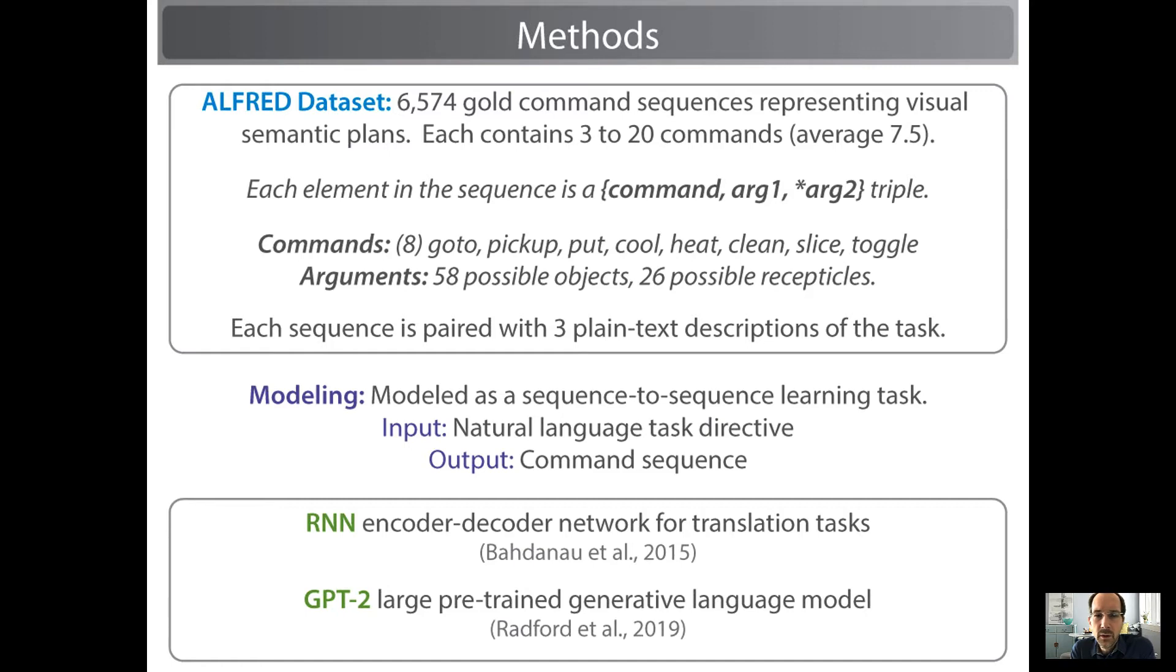In this paper, the visual semantic planning task is modeled as a sequence to sequence translation problem, where the input is the natural language task directive and the output is the gold command sequence. This paper looks at two language models for doing sequence to sequence learning: a baseline RNN encoder-decoder similar to an LSTM model that's been pre-initialized with 300 dimensional GloVe embeddings, as well as GPT-2, which is a very large language model that's been pre-trained on about 40 gigabytes of text.